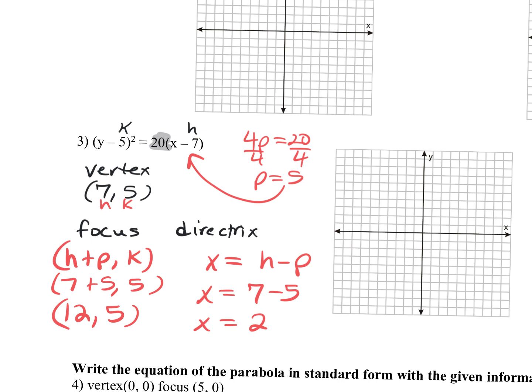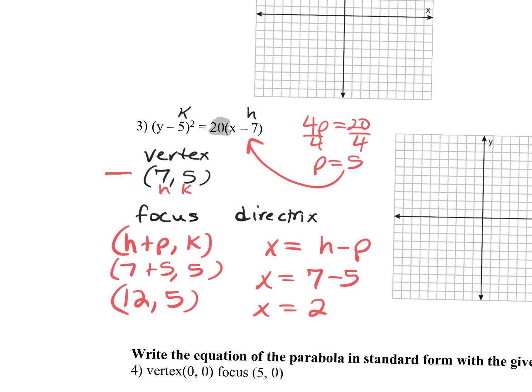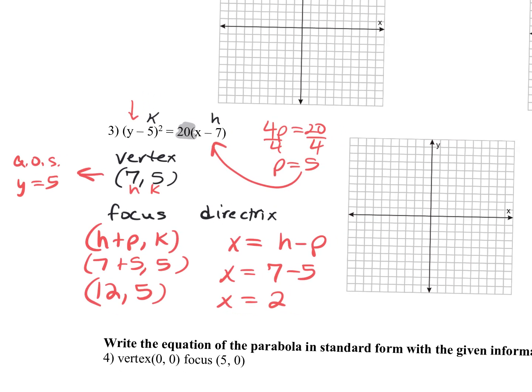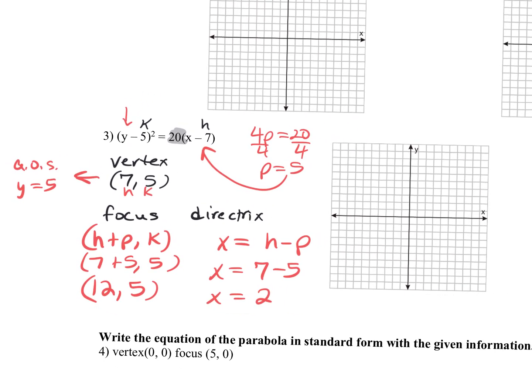Now we can graph this. I'm not going to expect you to find the axis of symmetry, but if you did, it's the squared variable of the vertex. So my axis of symmetry is y equals 5, because that was the squared variable — it's the y. Let's go ahead and graph what we have: (7, 5) is the vertex.